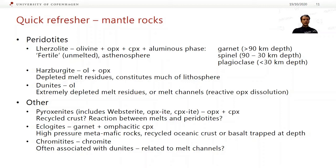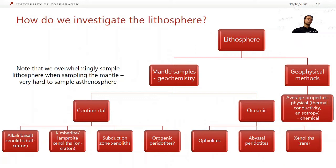In the other category, we've got pyroxenites — including websterite, which is a mixed ortho- and clinopyroxene rock, and orthopyroxenite or clinopyroxenite as more pure end members. These may represent chunks of recycled crust or reactions between melts from a recycled bit of crust like an eclogite and a pyroxene. Eclogites are garnet and omphacitic clinopyroxene — the very high pressure form of a basaltic composition, generally thought to represent recycled oceanic crust or basalt trapped and crystallized at depth. Finally, chromitites are basically pure chromite, often associated with dunites, related to those melt channels.